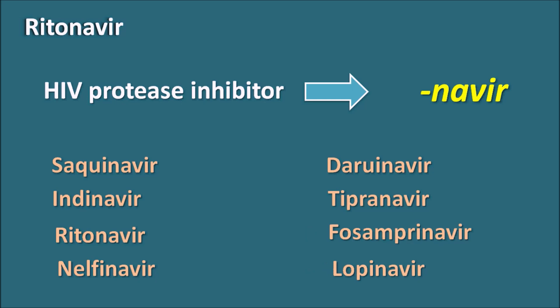Among these, Ritonavir is one of the drugs which is used as a booster drug or pharmacokinetic enhancer drug. In this video let us see why Ritonavir is used as a booster drug in the treatment of HIV.